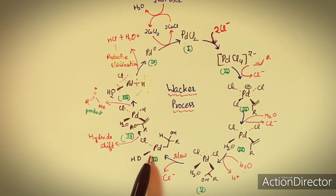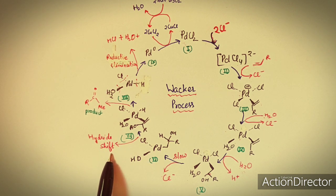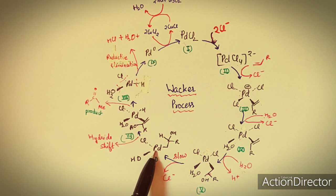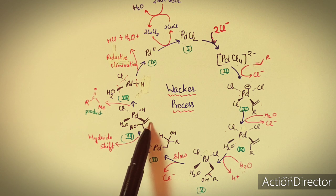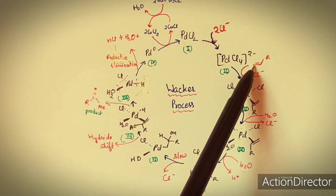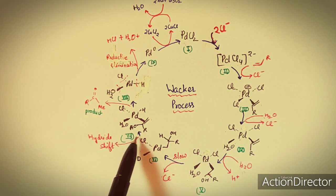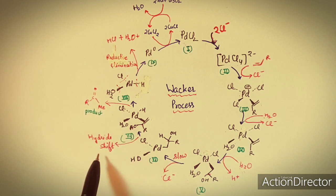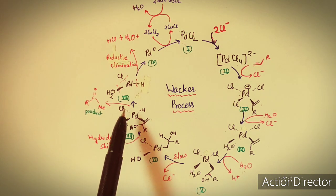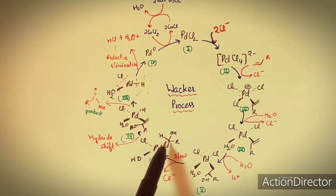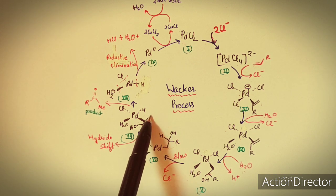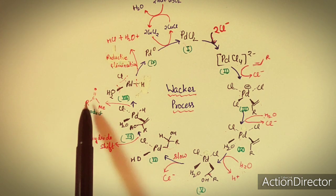After the 6th step comes the 7th step: a hydride shift takes place. This hydride shifts onto the palladium. This is known as a hydride shift. In the coordinated olefin, an OH group replaces the H group. During the hydride shift, product formation also takes place — when the hydride shifts to the palladium, this group eliminates in the form of an RCHO (carbonyl compound).